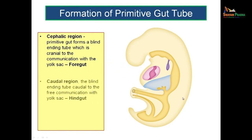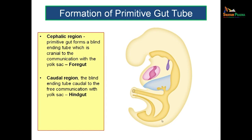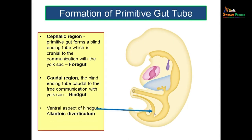The caudal region is again a blind ending tube, and this is known as the hindgut. This is caudal to the communication with the yolk sac. Cranial to this communication you call it as foregut, and caudal to this communication you call it as hindgut, and both these tubes are blind ending tubes in the initial period. On the ventral aspect of the hindgut you will get an elongation known as the allantoic diverticulum, which will be pointing towards the umbilical cord because it is meant to vascularize the umbilical cord. The umbilical vessels are derived from the vessels of the allantoic diverticulum.